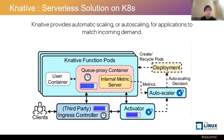According to the metrics the autoscaler receives, it computes the replica number based on the algorithm and decides whether to increase or decrease the pod number. The autoscaler then invokes the deployment controller to adjust the pod number. So the Knative platform provides zero-to-one pod creation as well as one-to-N replication.